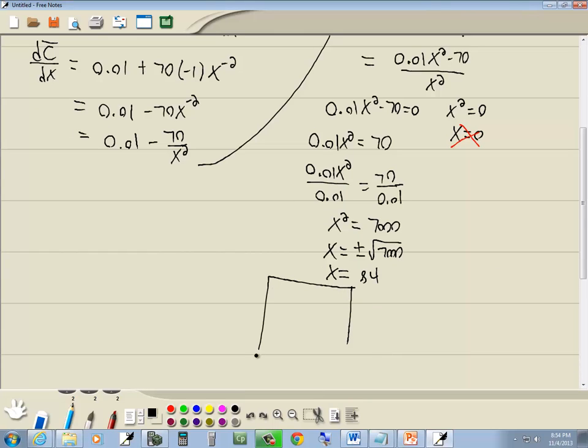Now we'll build a table of intervals. Clear over here is x equals negative infinity or x equals 0, whichever you choose. Clear over here is positive infinity. I'm going to choose test cases: something between 0 and 84 like 1, something greater than 84 but easy to work with like 100. We're going to plug those into our derivative.